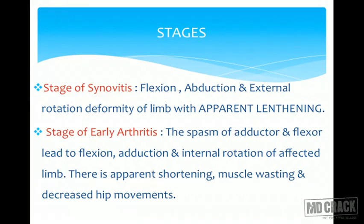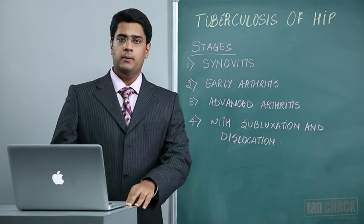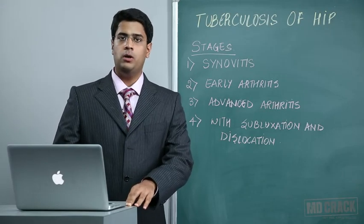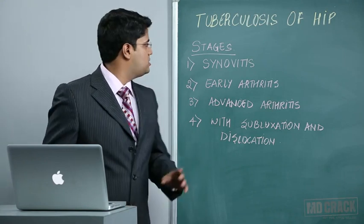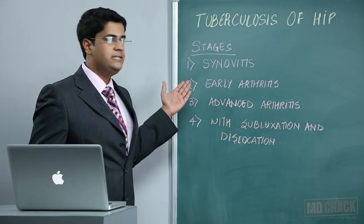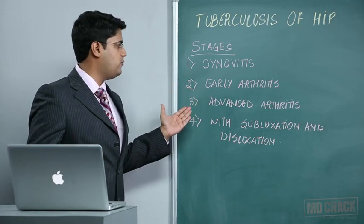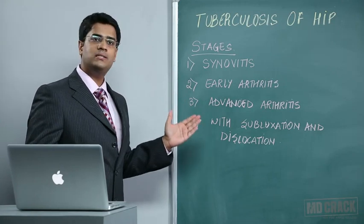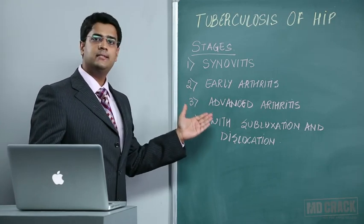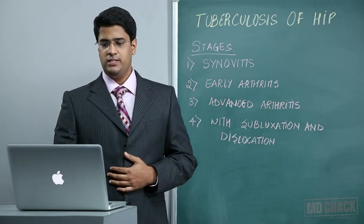The stages of tuberculosis hip are very important. There are mainly four stages — this can also come as an MCQ. The first stage is the stage of synovitis. Second is the stage of early arthritis. Third is the stage of advanced arthritis. Fourth is the stage of advanced arthritis accompanied by subluxation or dislocation. We will discuss each stage one by one.